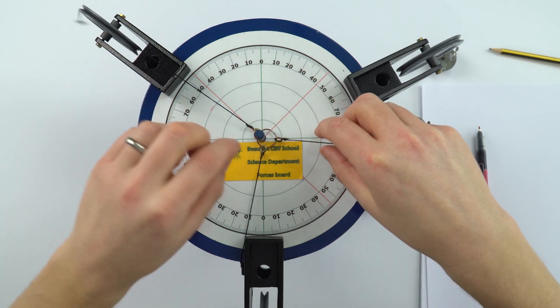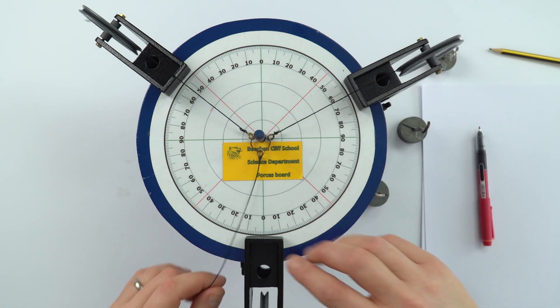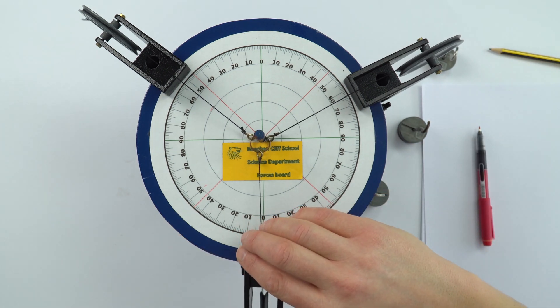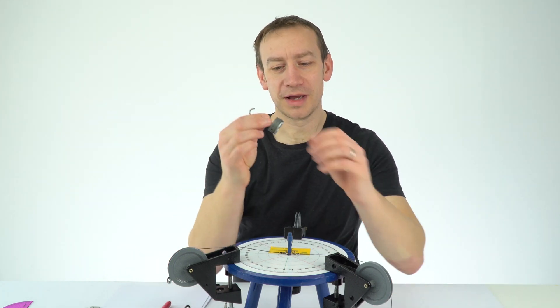If I put the center of this wooden bit that sticks up through the loop, we can then hang the bits of string over the pulleys. Now what we're going to do is apply a force to each of these using these small masses.